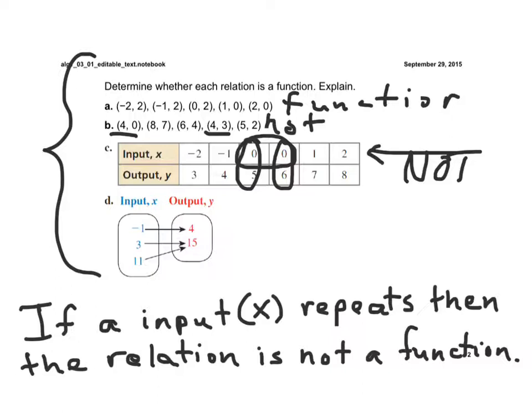In this case, the input negative 1 goes to 4, 3 goes to 15, and 11 goes to 15. I can have the same output paired with different inputs, but I can't have the same input paired with two different outputs. To make this simple, when you're trying to determine if a relation is a function, we simply look to see if x repeats. If an input or x value repeats, then the relation is not a function.